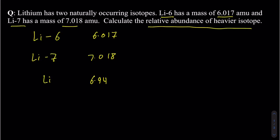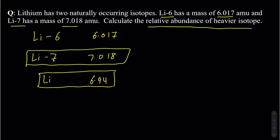Conceptually, out of lithium-6 and lithium-7, which one is going to be more abundant? You can look up the actual atomic mass of lithium, which is 6.94, and compare it to the two isotopes. The value 6.94 is actually closer to lithium-7, so lithium-7 should be more abundant in nature than lithium-6.